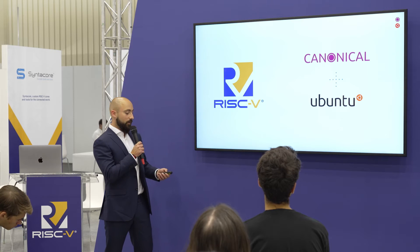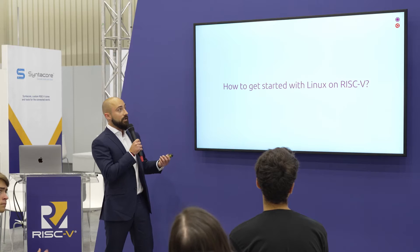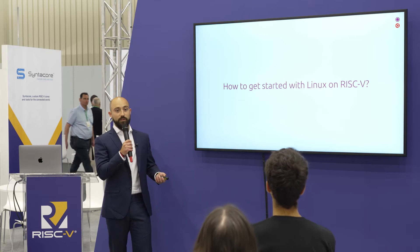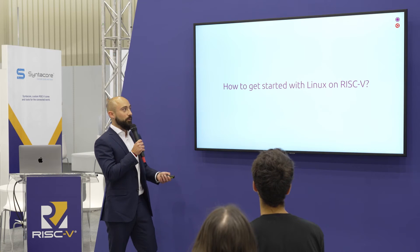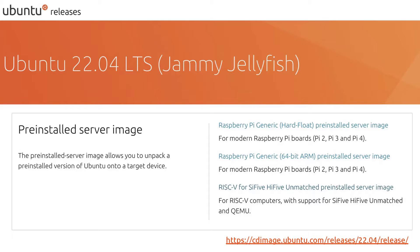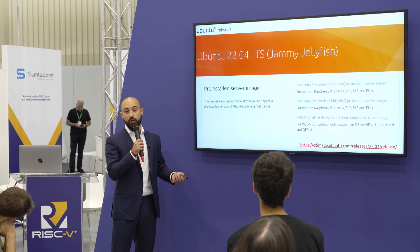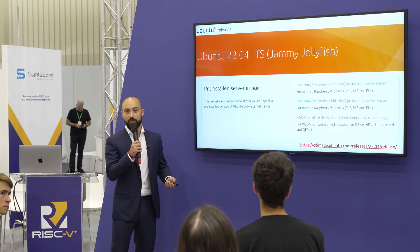Let's talk about how to get started with Linux on RISC-V and the availability of our images on multiple different RISC-V platforms. The first entry point when you get started with Ubuntu is to download an image from our CD images web page. We recently released our Jammy Jellyfish release 22.04, and we have that release available for both the SiFive HiFive Unmatched and QEMU architectures. It comes as a pre-installed server image as well as a server installer image available on that web page.